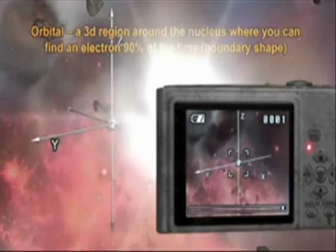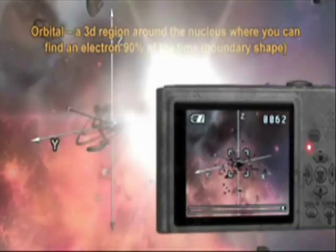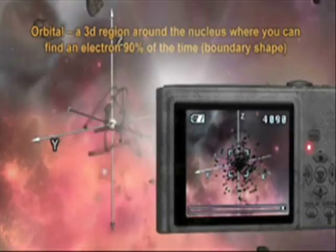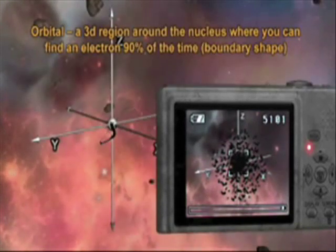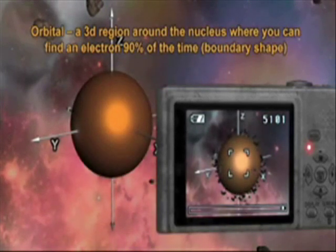Imagine that we take a picture of this electron every second for a day, a week, or month. We see that all these pictures laid on top of one another begin to form an electron cloud around the nucleus. Remember, all these hypothetical pictures, or data points, represent where the electron has been over time.